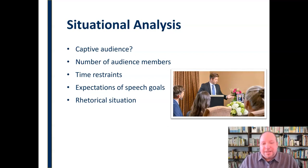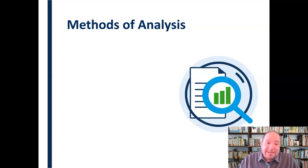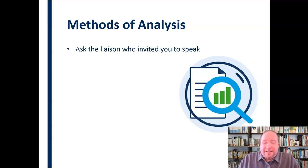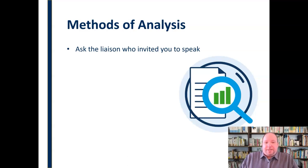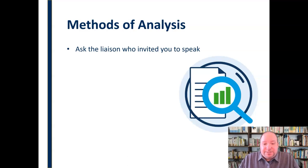So we conduct demographic, specific, and situational analysis — but how do we find this information? One common method is to ask the liaison who invited you to speak. Presumably someone connected you with this group, so you can ask that person: who's going to be there, what's the makeup of the audience, what are the demographics, what's the physical setup, and what are the expectations around time?